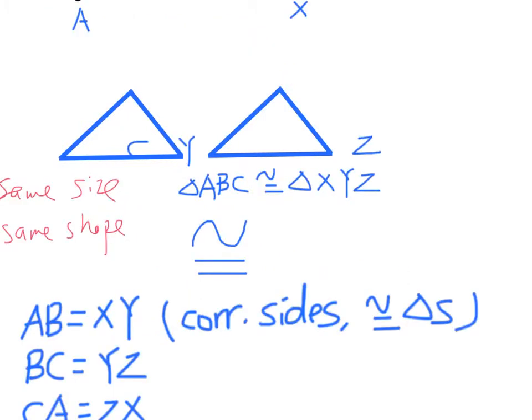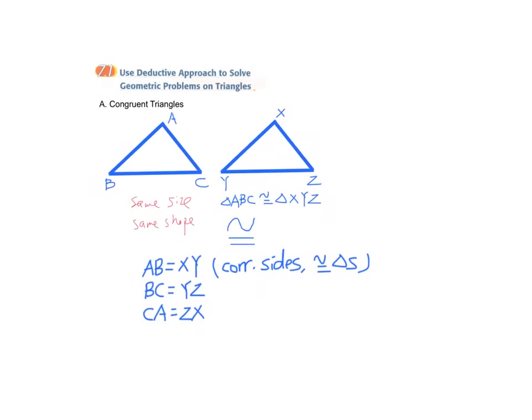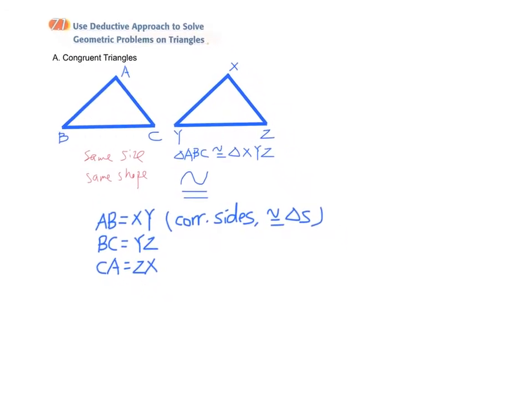In addition, all the corresponding angles are equal too. That is, angle A equals angle X, angle B equals angle Y, angle C equals angle Z. And therefore this is the second conclusion. All the corresponding angles are equal. And we can write down the reason in this way: corresponding angles, congruent triangles.